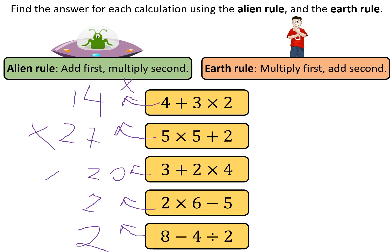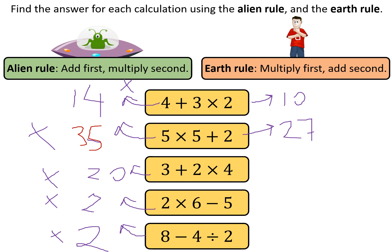These are all the incorrect answers. The correct way — the earth rule — is to multiply first, then add second. So we do 4 times 3 first, which is 12, then 4 plus 12 is 10. Wait — 4 times 3 is 12, then we add 4 to get 10. This next one: we do 5 times 5 first, which is 25, plus 2 equals 27. The alien rule would have done 5 plus 2 first giving 7, times 5 equals 35 — that's wrong. For 3 plus 2 times 4: 2 times 4 is 8, 3 plus 8 is 11.